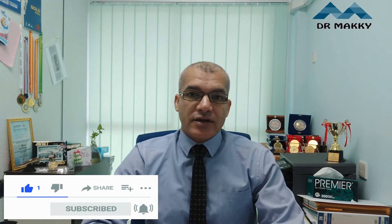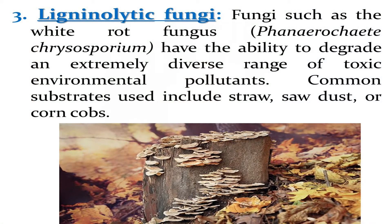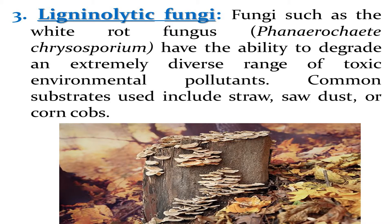The third type is fungi — specifically lignocellulolytic fungi, which are able to degrade lignin, one of the polysaccharide compounds. These fungi are related to white rot fungi, like mushrooms — for example, Phanerochaete chrysosporium — and are able to degrade different toxic environmental pollutants. Common substrates used include straw, sawdust, and corn cob as cellulosic carbon sources.